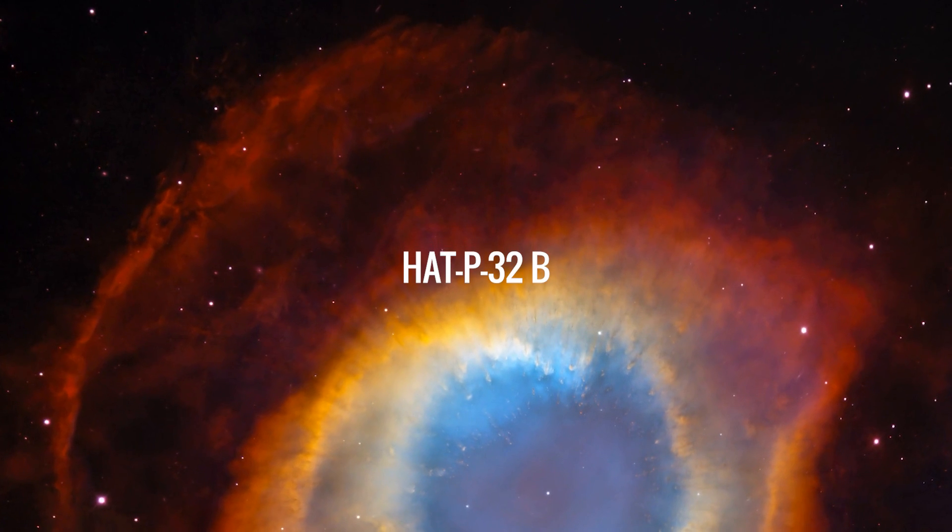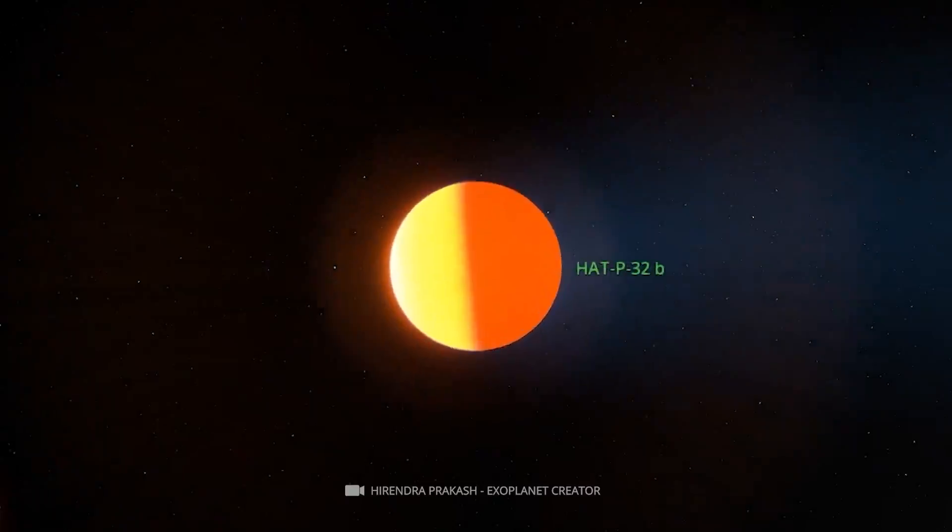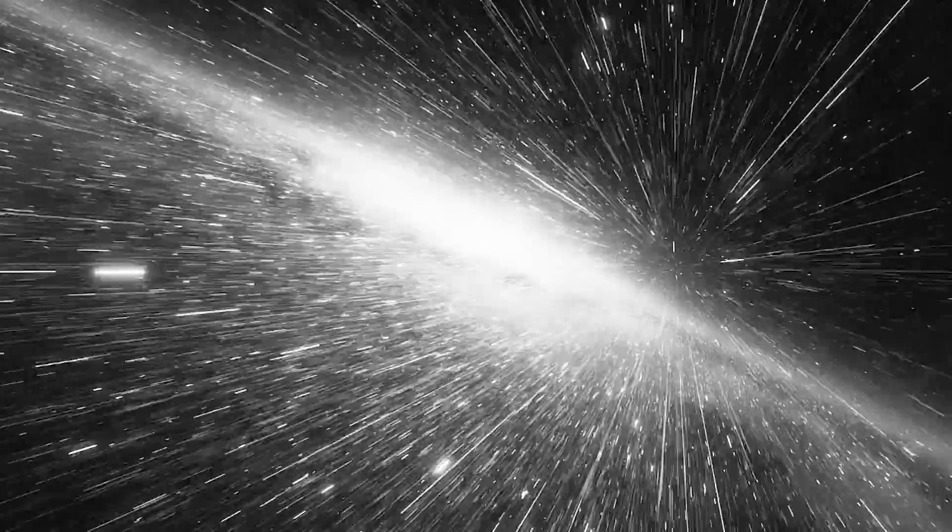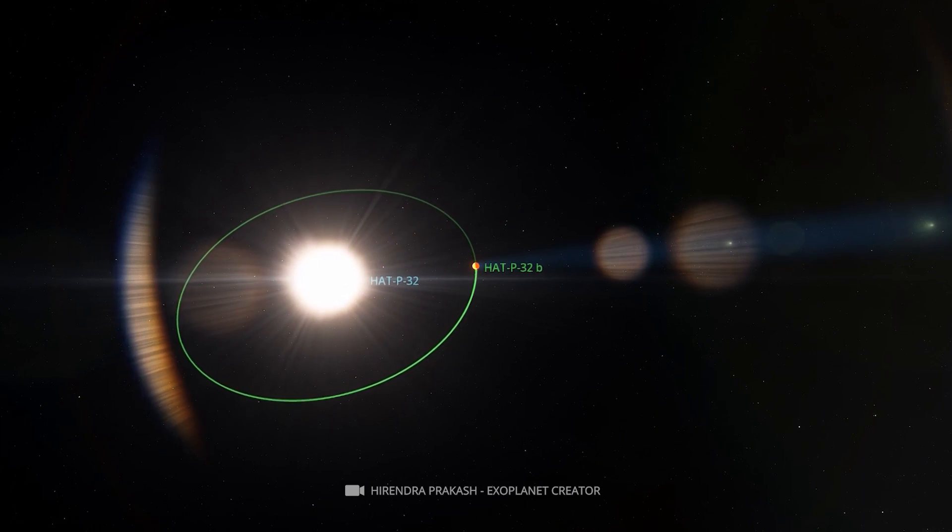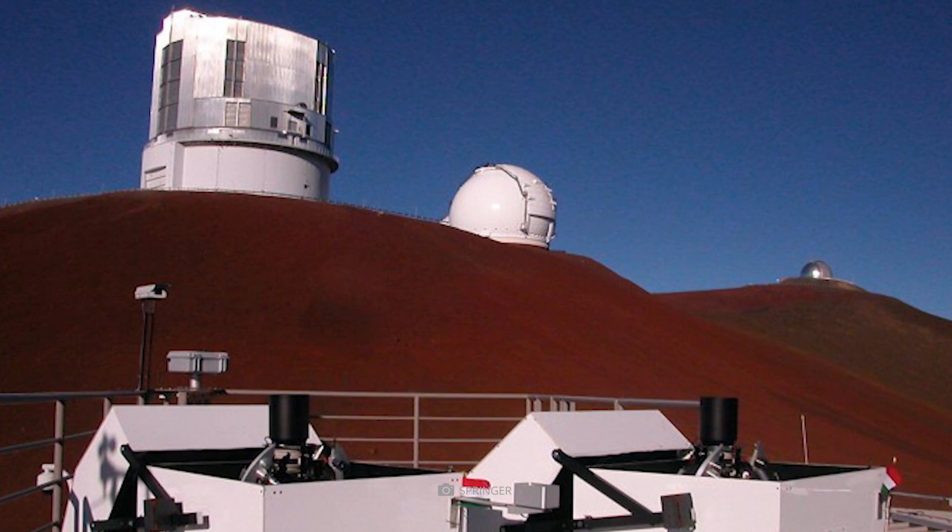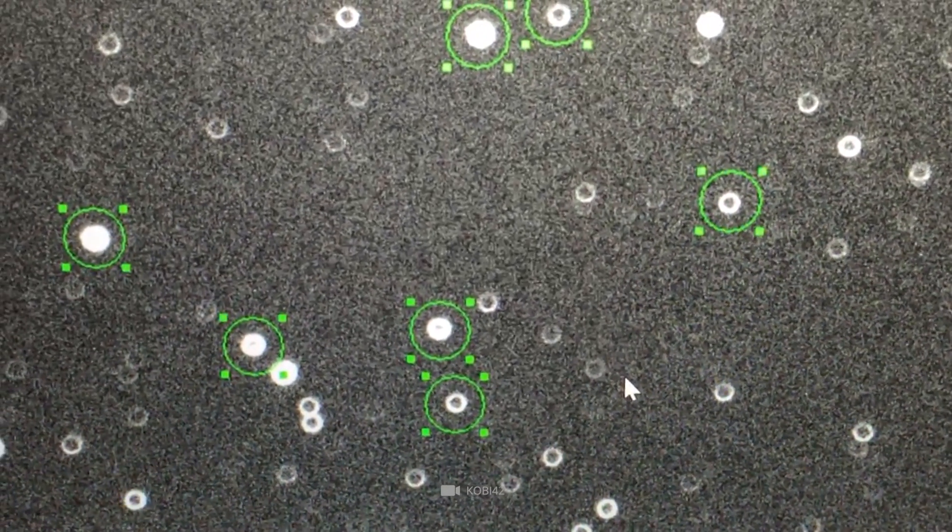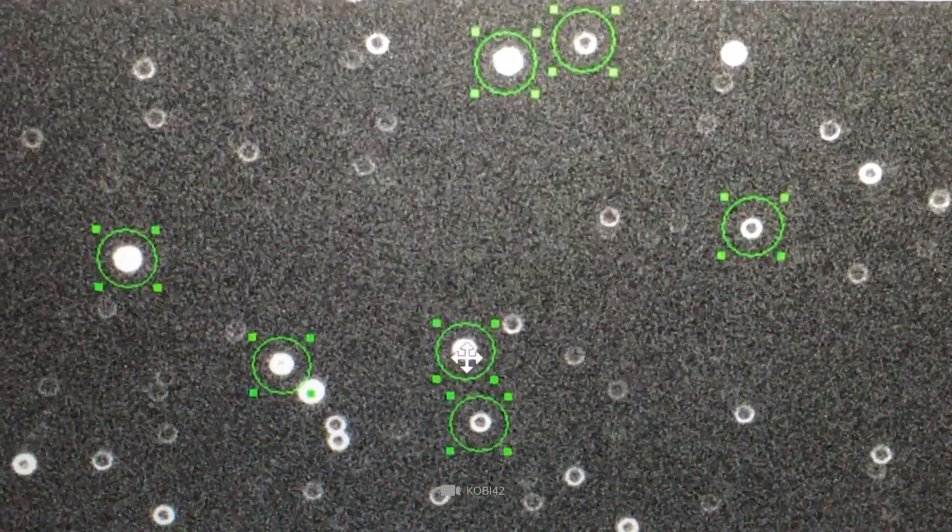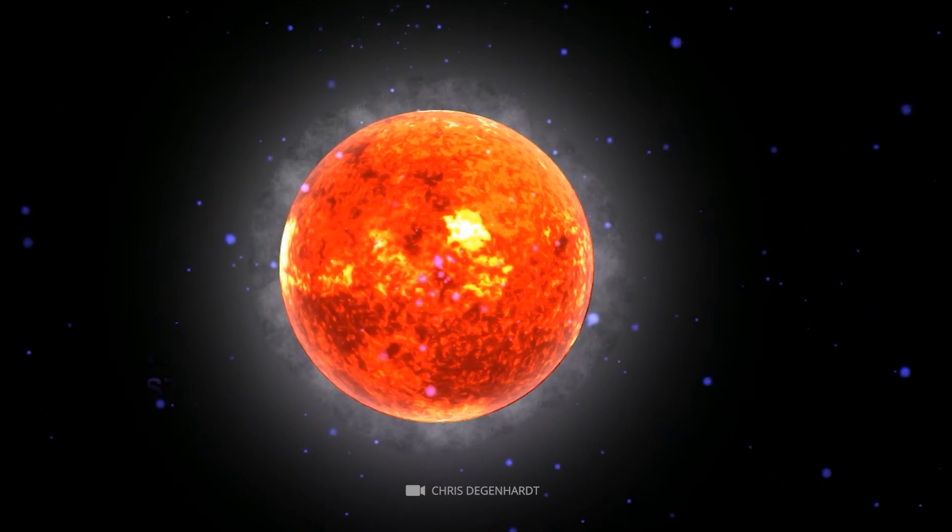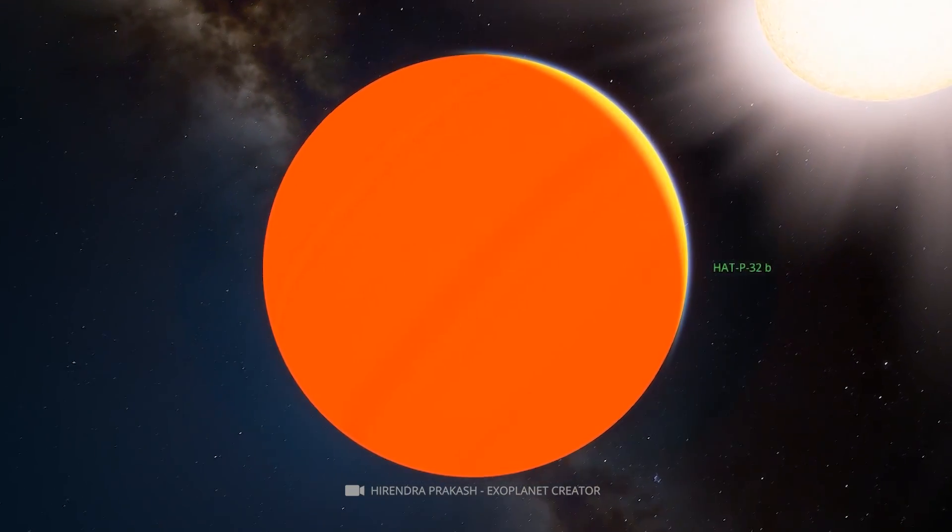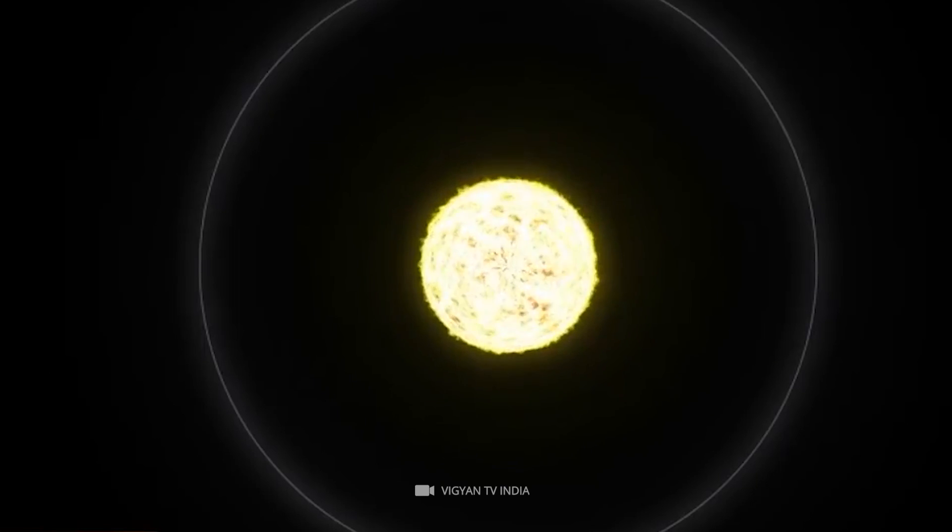HAT-P32b has a mass of 0.68 Jupiter. It is 950 light-years away from Earth and orbits an F-type star named HAT-P32. This planet was first observed by the HATnet project in 2004, but was formally discovered on November 3, 2011. It takes 2.2 days to complete one orbit. HAT-P32b has a radius of 145,630 km and has an apparent magnitude V of 11.29 when viewed from Earth.